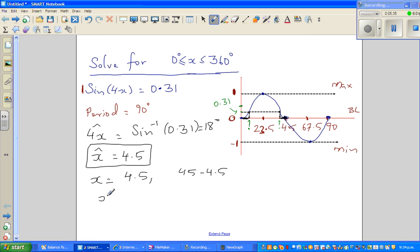So within 90 degrees, you have 4.5 and 40.5. But the question is, you want all the x's between 0 to 360. So now to get the other x's, you have to simply add 90 to this, because this will be repeated every 90 degrees, because the period is 90 degrees.